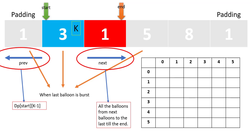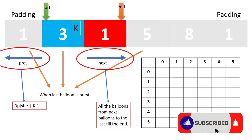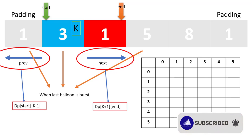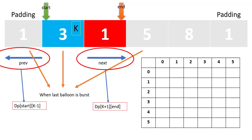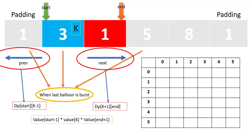Similarly, the next sub-range will be the balloons from k+1 till end, represented as dp[k+1][end] — the maximum coins from bursting all those balloons. Once we have burst all balloons before and after k, the last remaining balloon is k. Its burst value is nums[start-1] * nums[k] * nums[end+1]. These three values — dp[start][k-1], the last balloon's coin value, and dp[k+1][end] — form the combination that gives the answer for the range [start, end].